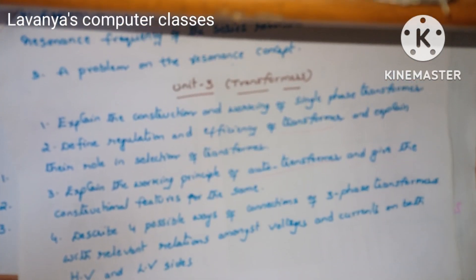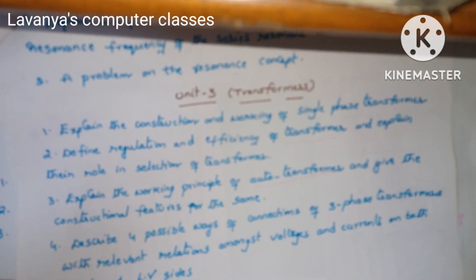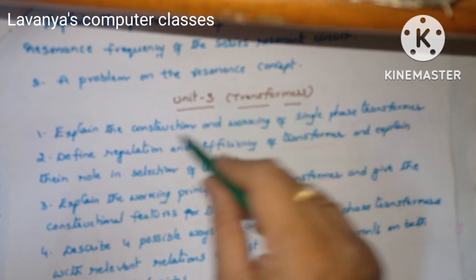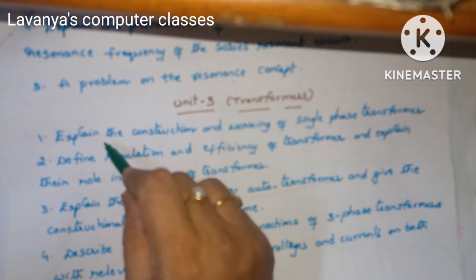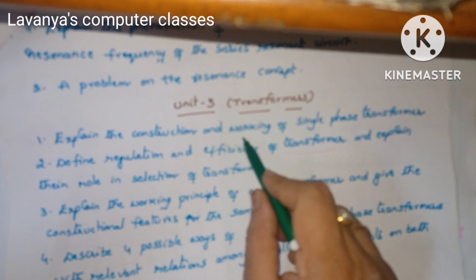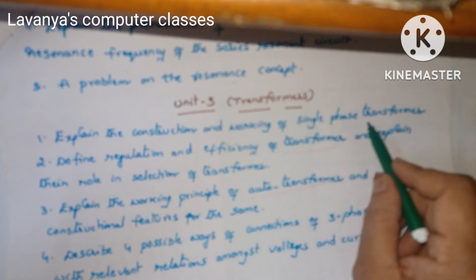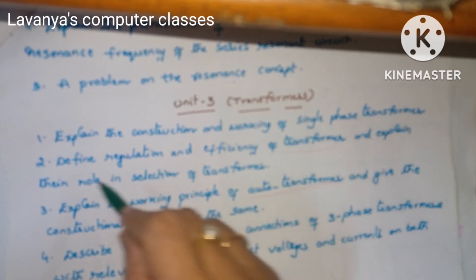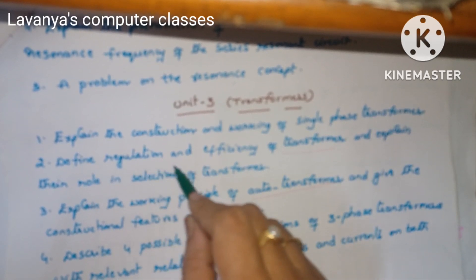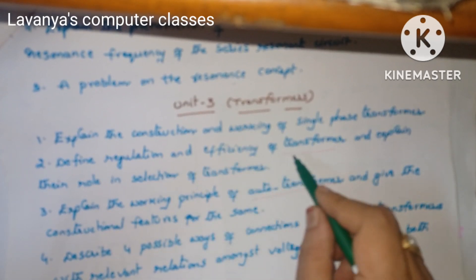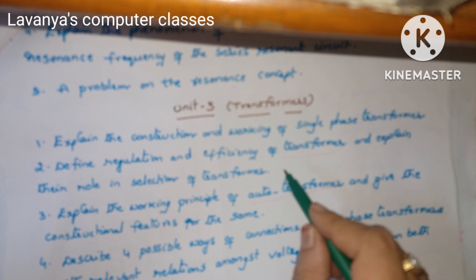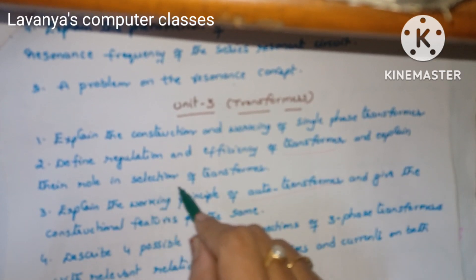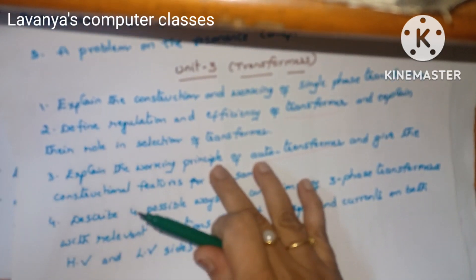Next, unit 3 important questions are on transformers. The questions are: explain the construction and working of a single phase transformer. Second, define regulation and efficiency of a transformer and explain the role in selection of a transformer.